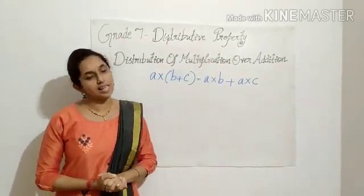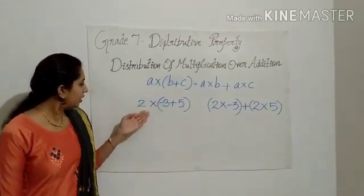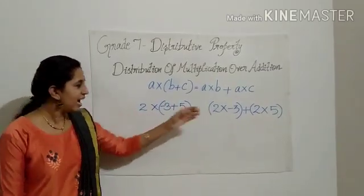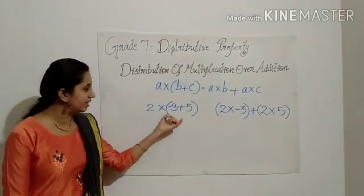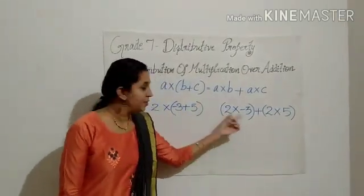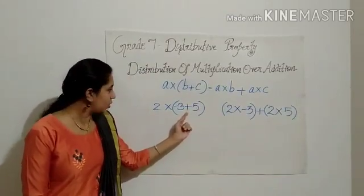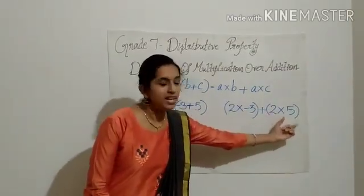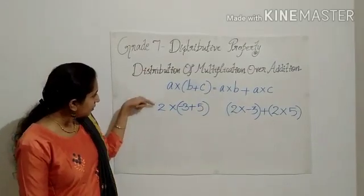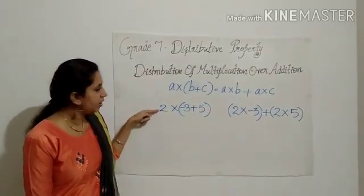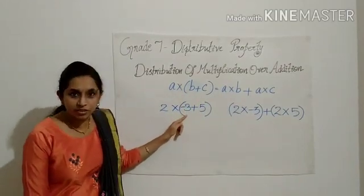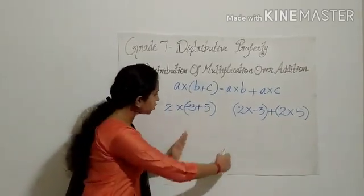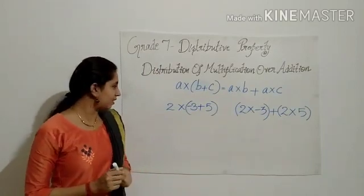Let us begin with an example. Look at this: 2 into negative 3 plus 5. I have distributed 2 to negative 3, that is 2 into negative 3. The operation is addition. I have distributed this 2 to 5, that is 2 into 5. Here in place of A we have 2, in place of B we have negative 3, in place of C we have 5. Let us find the answer.